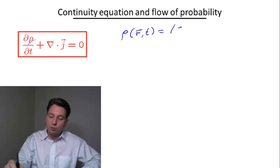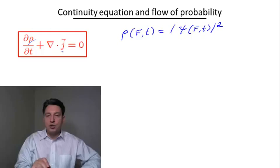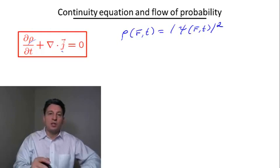which per the Born rule is equal to the absolute value of the wave function squared. And j here is the probability current, which we actually are going to derive.